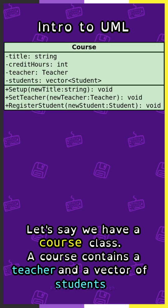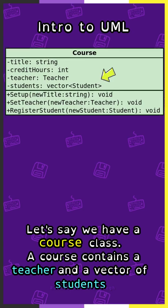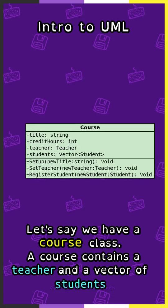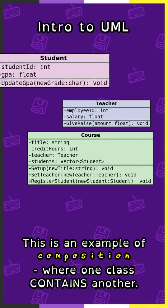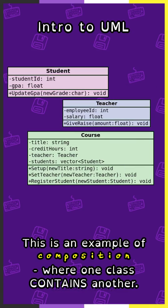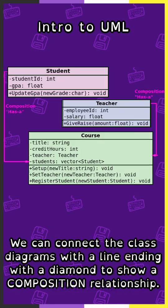Let's say we have a course class. A course contains a teacher and a vector of students. This is an example of composition, where one class contains another. We can connect the class diagrams with a line ending with a diamond to show a composition relationship.